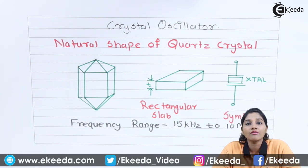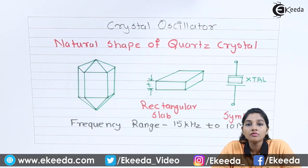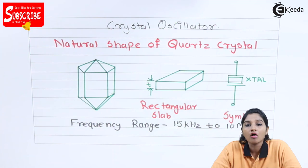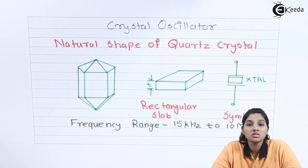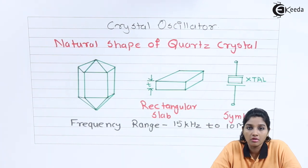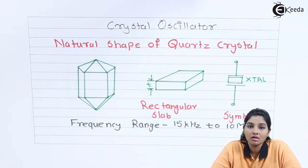Quartz crystal has a property called the piezoelectric effect. According to this effect, if an AC signal is applied across a quartz crystal, it starts producing vibrations. The frequency of vibration is approximately equal to the frequency of the applied AC input signal.